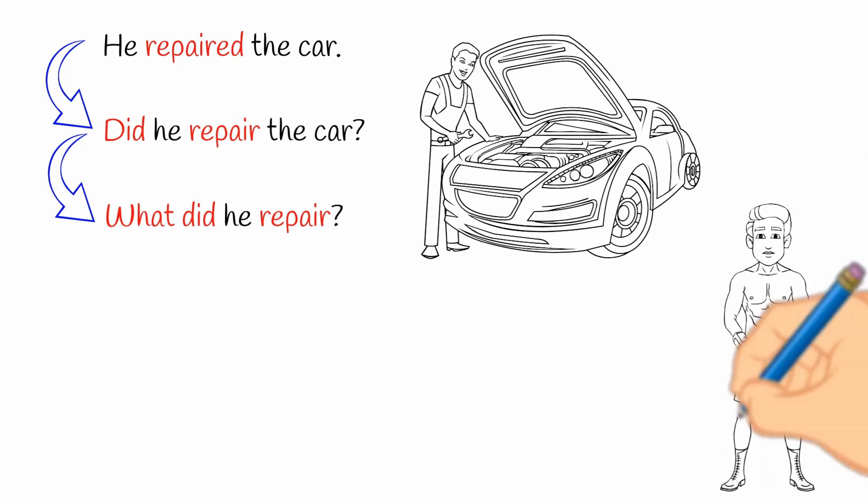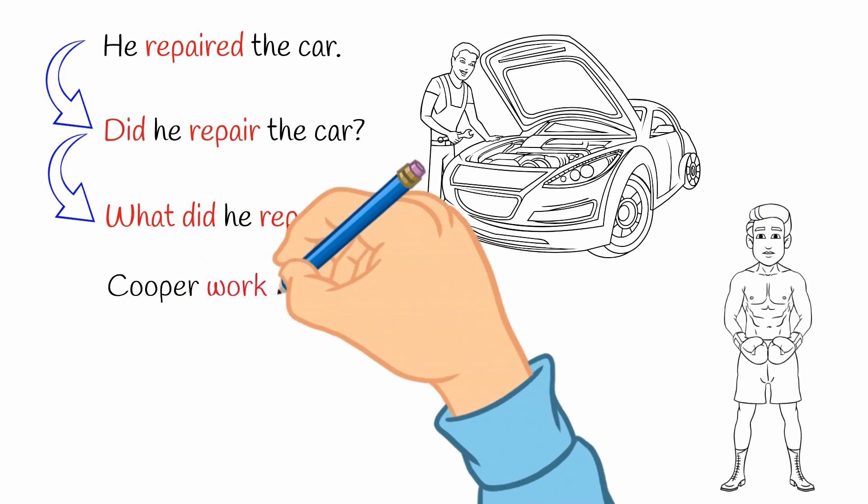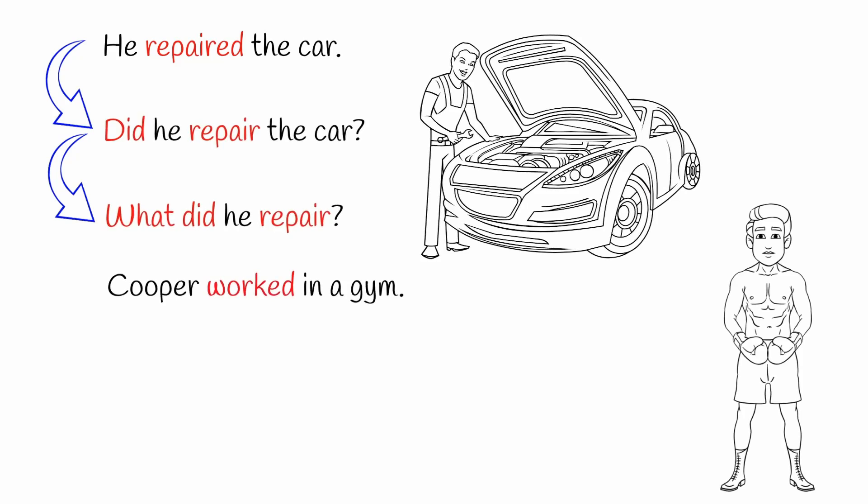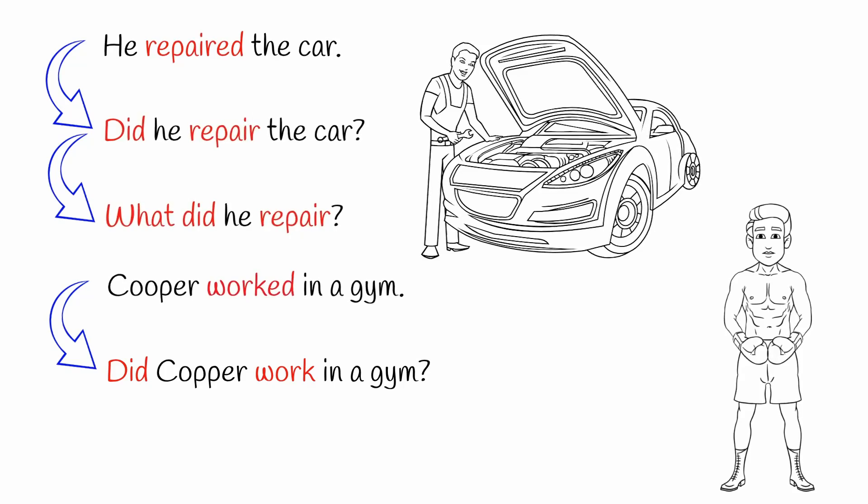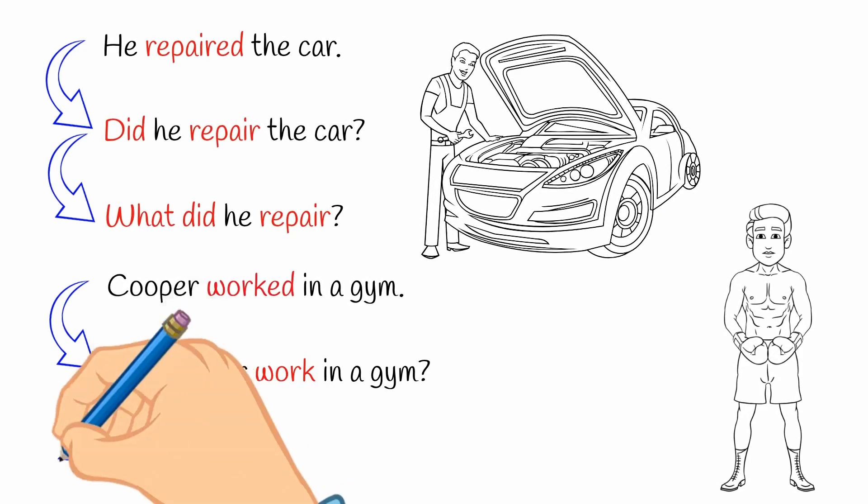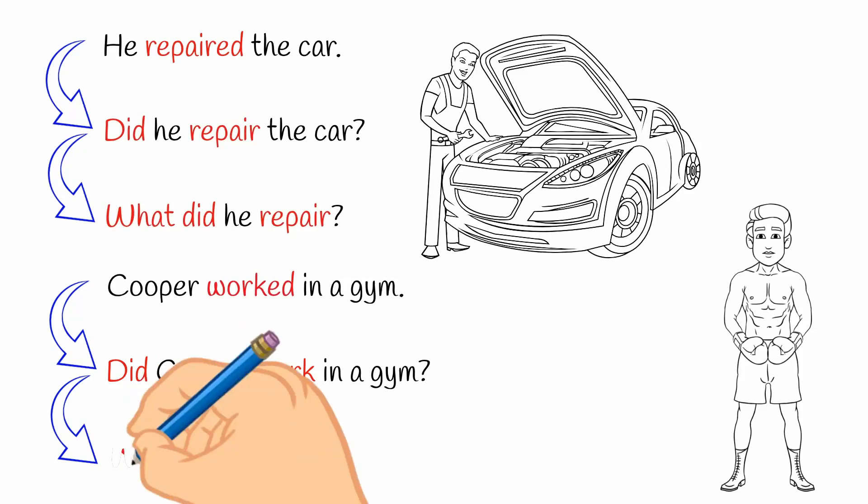Let's take a look at another. Cooper worked in a gym. This sentence is past tense because the verb uses ed. When we change to a yes no question, we add did and change worked to work. If we didn't know where he worked, we would ask where did he work? Adding where to the front, keeping did and using the regular verb.